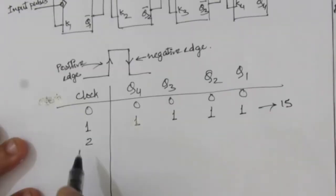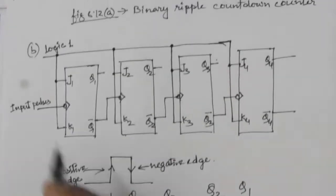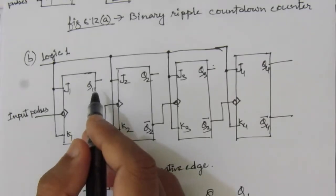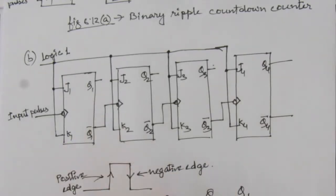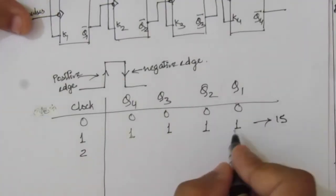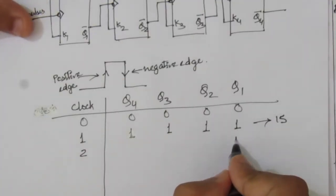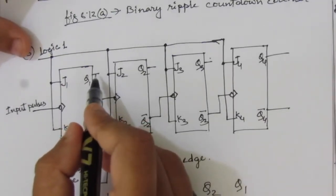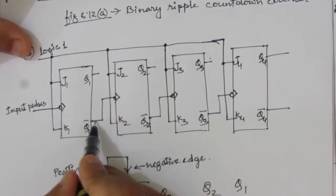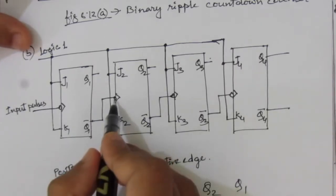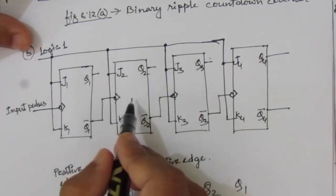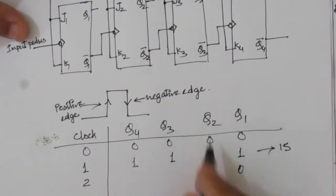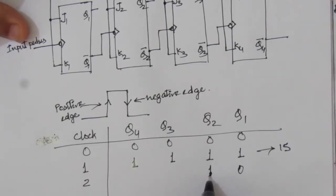With the second negative edge clock pulse, Q1 toggles from 1 to 0. When Q1 becomes 0, Q1 complement becomes 1 — a zero-to-one (positive) transition — so the second flip-flop is not activated because it is negative edge triggered. Q2 remains in the previous state of 1. Similarly Q3 and Q4 remain unchanged. So after the second clock, we have Q4Q3Q2Q1 = 1110, which is 14.